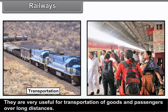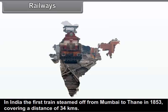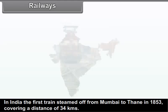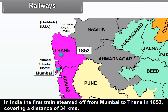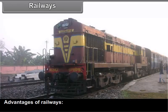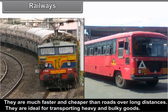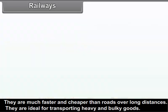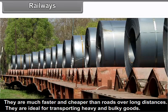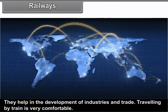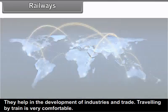Railways are one of the most important modes of land transportation and are very important for the economic development of a region. Generally, all railways belong to the government and are very useful for transportation of goods and passengers over long distances. In India, the first train steamed off from Mumbai to Thane in 1853, covering a distance of 34 km.